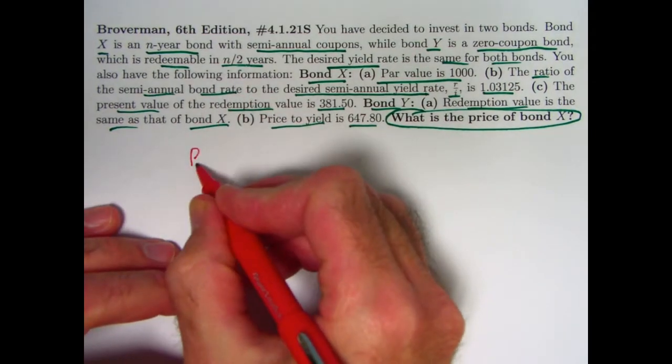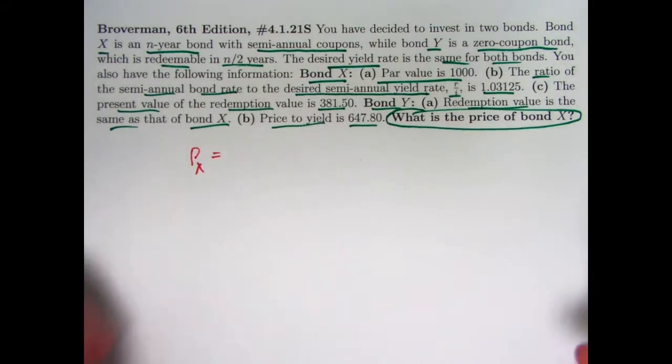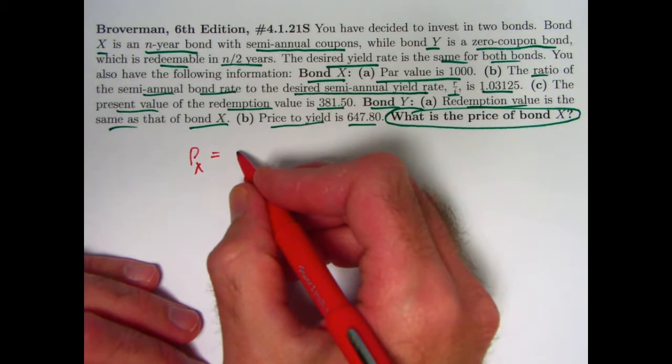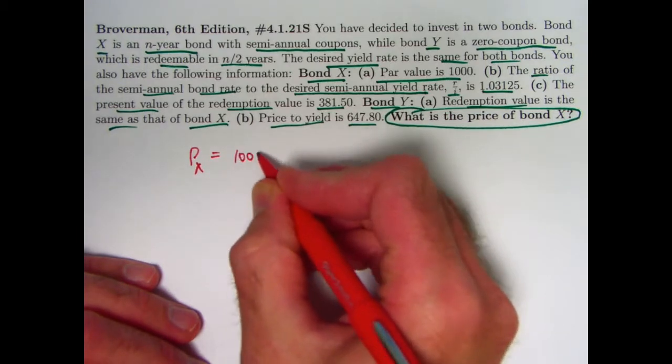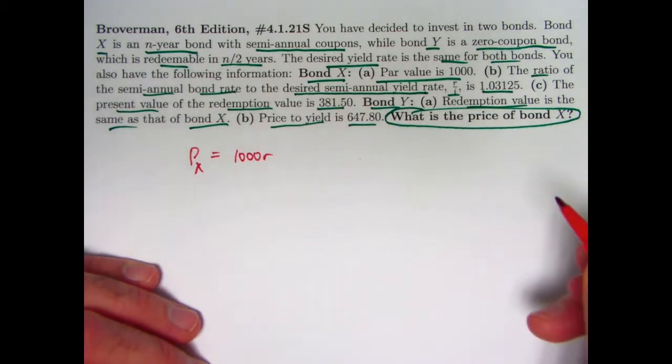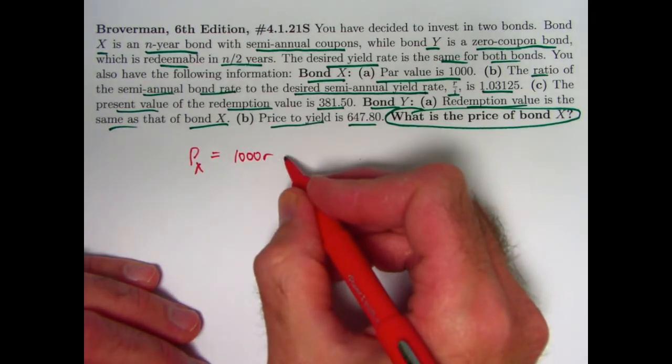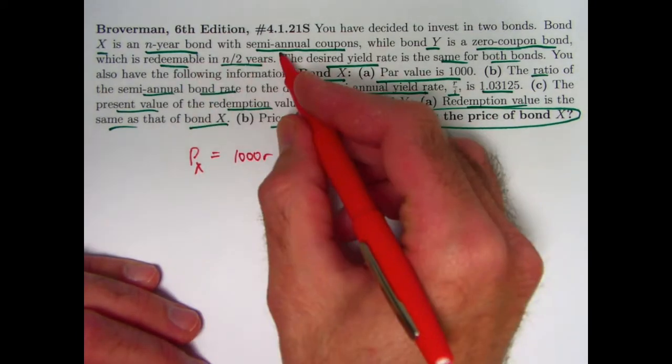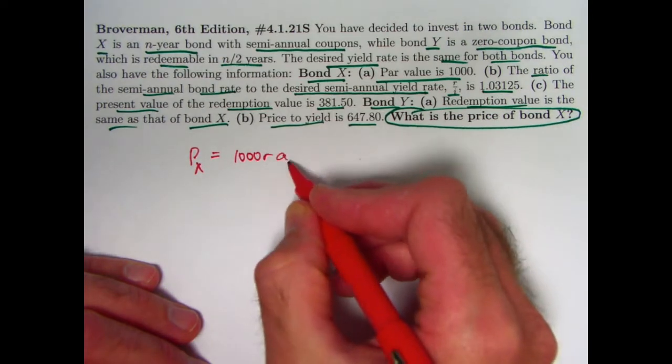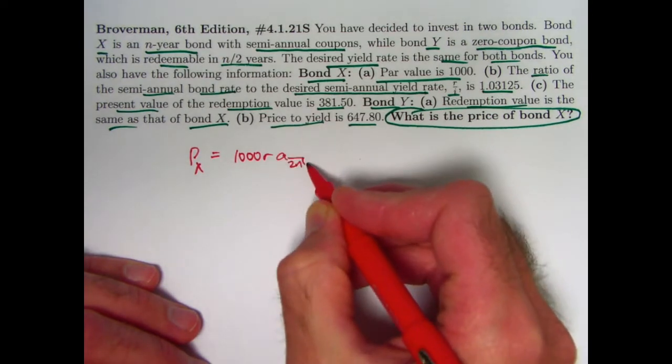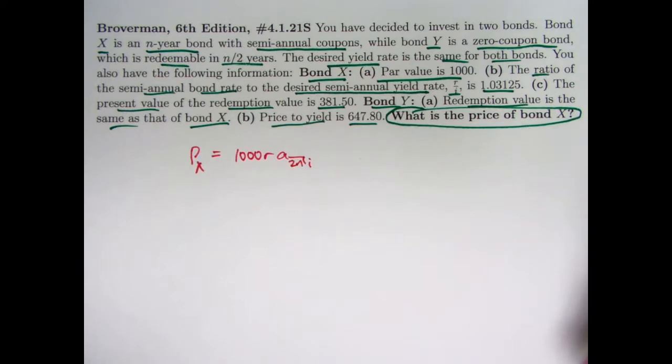So the price of bond X, I won't even bother drawing a number line here, would be the present value of all the coupons. What are the coupon amounts? It would be the face value 1,000 times the semi-annual coupon rate, R. That would be the amount of each coupon. There's 2N of them. It's an N-year bond with semi-annual coupons. So we multiply by A angle 2N at the given yield rate I, which is a semi-annual effective yield rate.